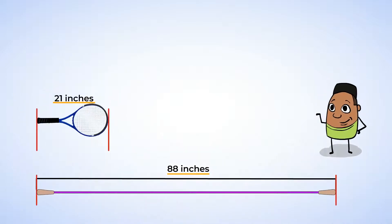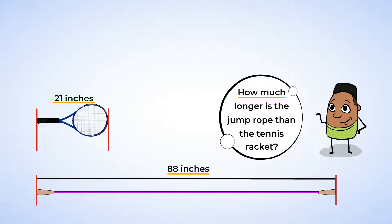Now that we have both measurements, we can also find out how much longer the jump rope is than the tennis racket. We are comparing the lengths. We know this because the question asks how much longer.